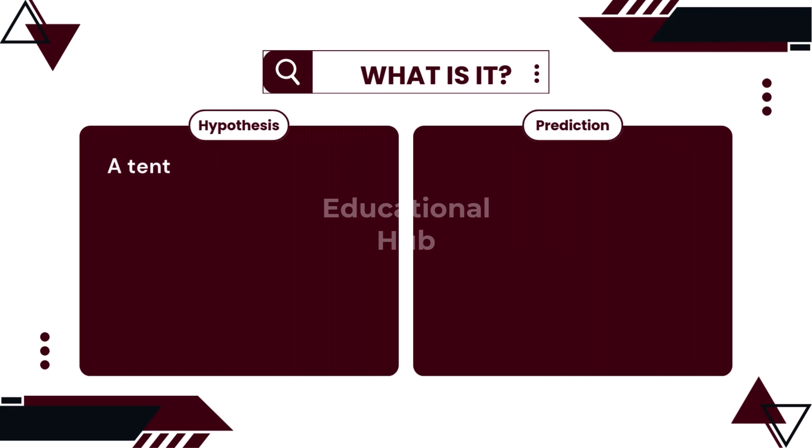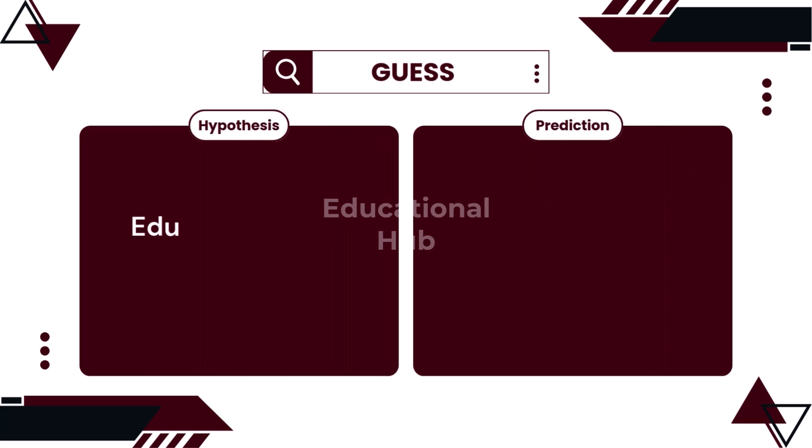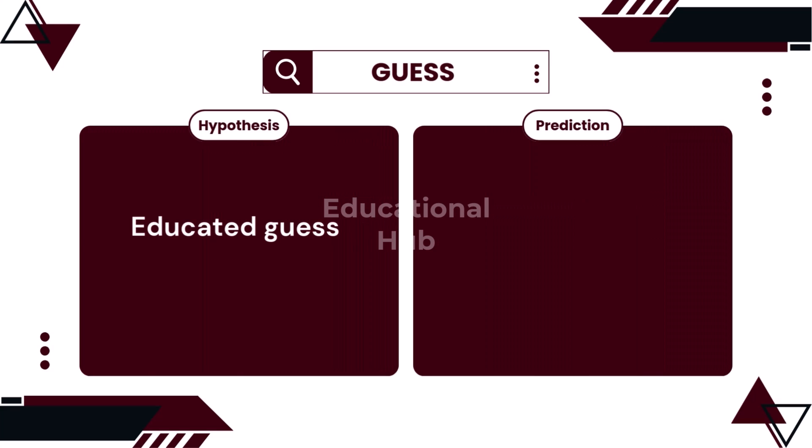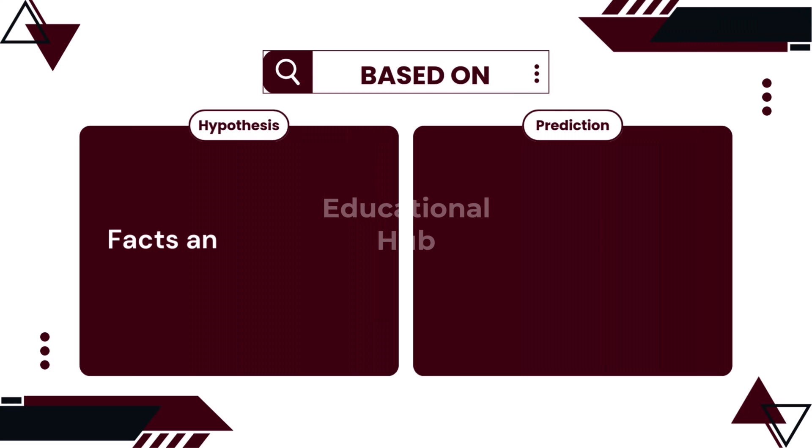2. The hypothesis is nothing but a tentative supposition which can be tested by scientific methods. On the contrary, the prediction is a sort of declaration made in advance on what is expected to happen next in the sequence of events. 3. While the hypothesis is an intelligent guess, the prediction is a wild guess. 4. A hypothesis is always supported by facts and evidence.